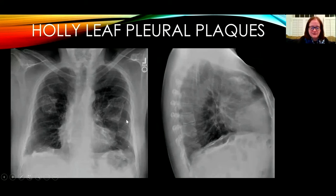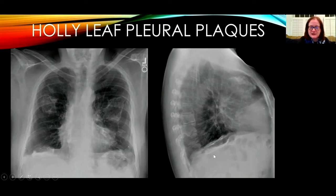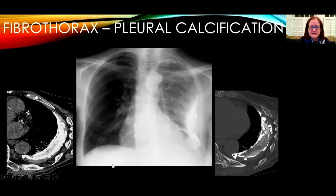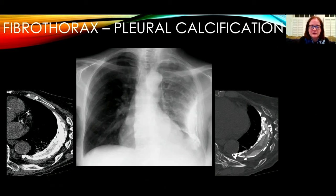Sometimes pleural plaques can calcify, as in this patient with holly leaf calcified pleural plaques — bilateral calcified pleural plaques seen in the setting of previous asbestos exposure. Typical locations include upon the hemidiaphragms and the medial aspect of the chest. This patient has extensive calcification of the pleural space on the left, known as fibrothorax. CT with lung window, bone window, and soft tissue window settings shows calcification of the visceral and parietal pleura with a decrease in volume of the left hemithorax. Fibrothorax can result from previous hemothorax or from empyema with histoplasmosis or tuberculosis infection.